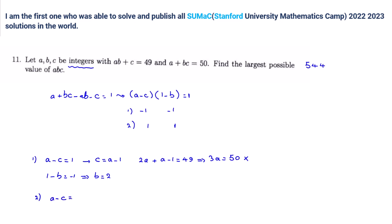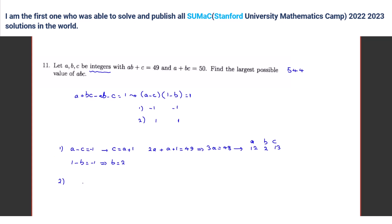Yes. So — sorry — both of them should be negative 1, right? Yeah. And then C is A plus 1, so you write A plus 1, so 3A is 48, in this case, and A is 12 — actually A is 16. So A is 16, B is 2, and C is A plus 1, which is 17, right?